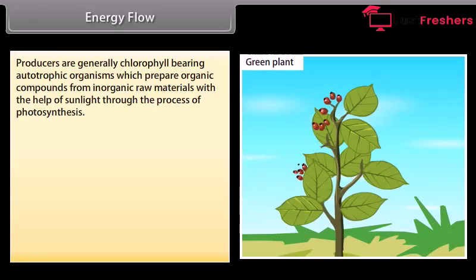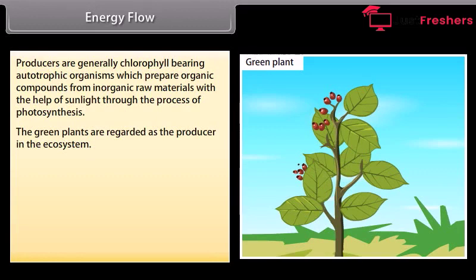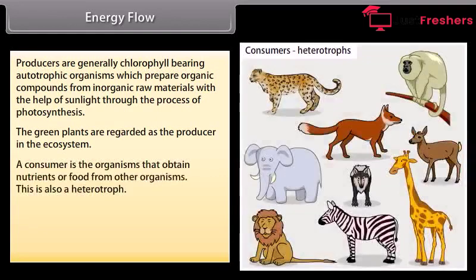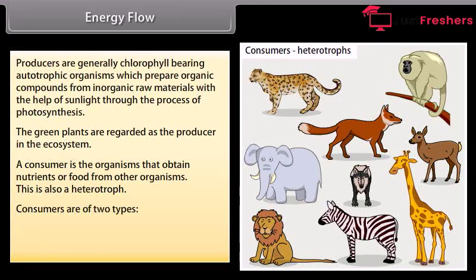Energy flow. Producers are generally chlorophyll-bearing autotrophic organisms which prepare organic compounds from inorganic raw materials with the help of sunlight through the process of photosynthesis. The green plants are regarded as the producers in the ecosystem. A consumer is an organism that obtains nutrients or food from other organisms — this is also a heterotroph. Consumers are of two types: herbivore and carnivore.